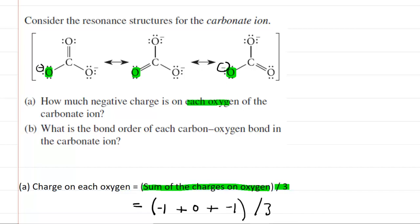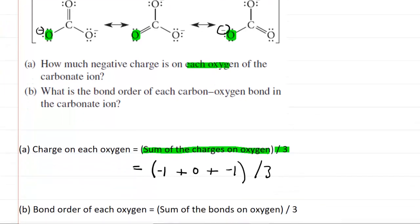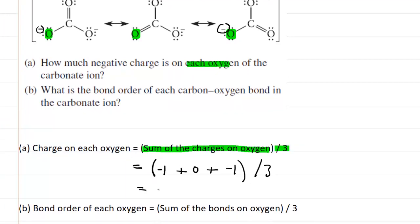And then we're going to divide this by three. So if you add the quantities in the parentheses, you're going to get negative two. And then this is divided by three. And that would be the answer. So that oxygen that we highlighted has an average charge of negative 2/3. And the other oxygens do as well. You might want to confirm that for yourself by performing the same calculation on each of the other two oxygens.